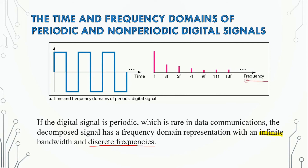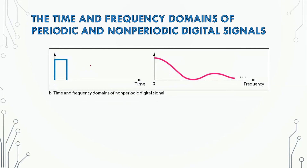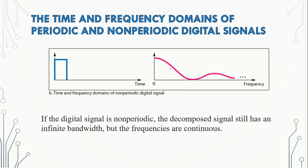The difference between periodic and non-periodic digital signals is the frequency. If you look at the non-periodic digital signal, there is no pattern of repetition. The non-periodic digital signal has continuous frequency. If the digital signal is non-periodic, the decomposed signal still has an infinite bandwidth. It shares common characteristics with the periodic digital signal, but the frequencies are continuous.